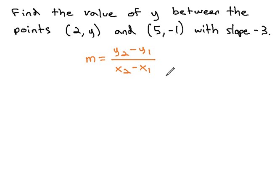While we can label either point in either way, my suggestion is to label the point with the unknown value as point 2.